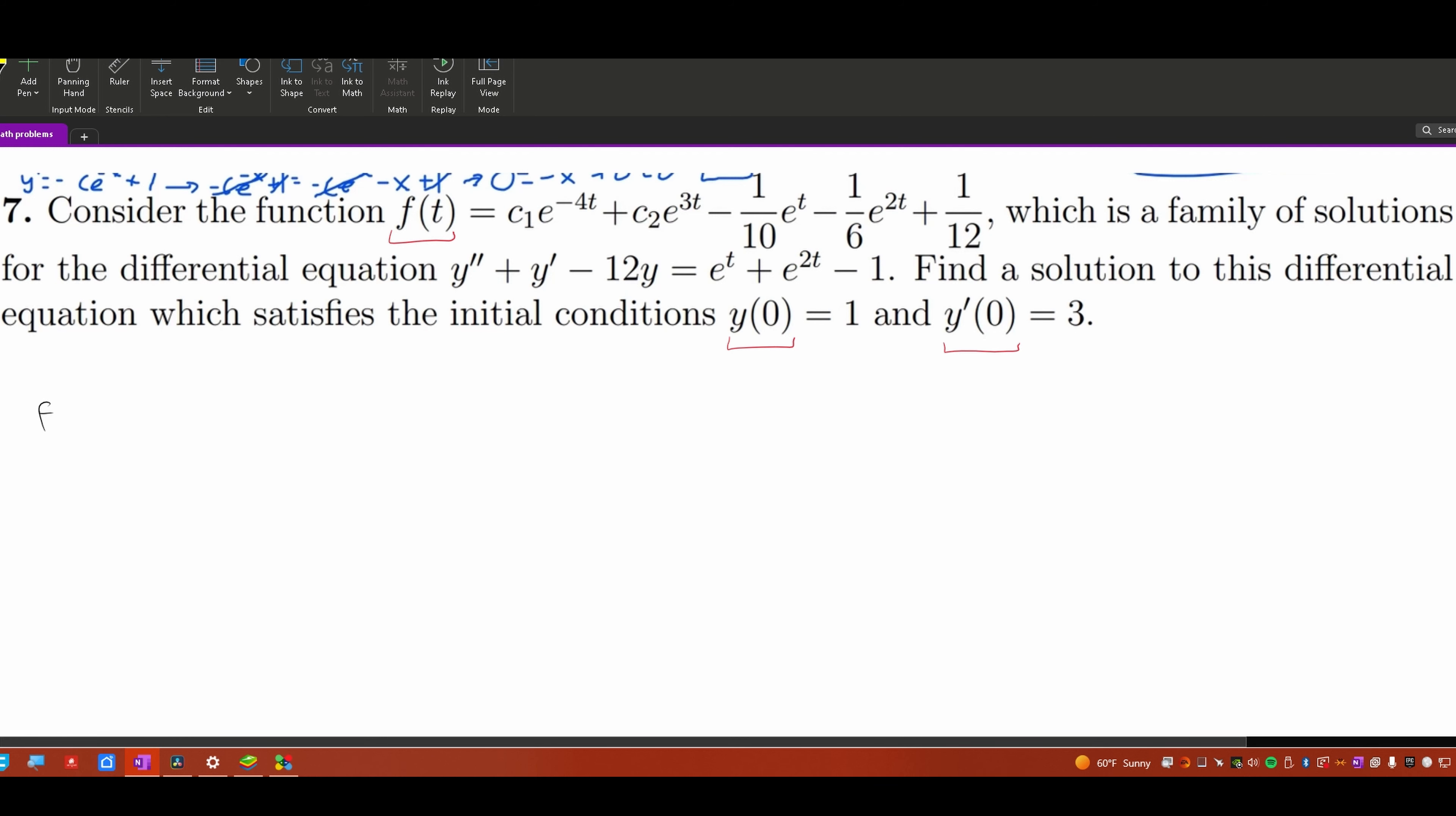First, let's start off with f(0). So this is going to be equal to 1, and this itself is going to be equal to, if we plug in 0 for our exponents, we know e or anything to 0 is going to give us 1. So this is just going to be equal to c1 plus c2, and then we'll have a minus, and then the same thing with these, just 1 over 10 minus 1 over 6 plus 1 over 12.